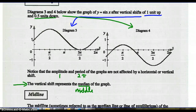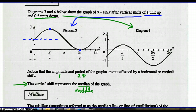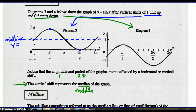For diagram 3, let's find the middle of this graph. The highest point it gets to is 2 and the lowest point is 0. Halfway between 2 and 0 is 1. So the midline of this graph is y equals 1. That's the equation for the middle of that graph.